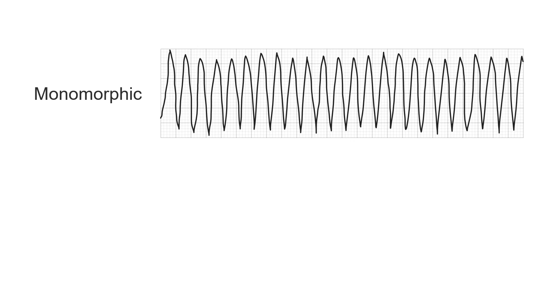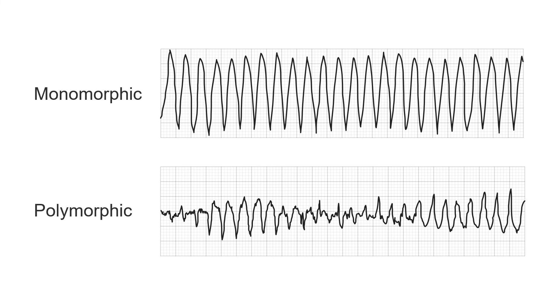VT can also be described as monomorphic when all the QRS complexes have the same shape, or labelled polymorphic when the shape changes from one beat to the next.